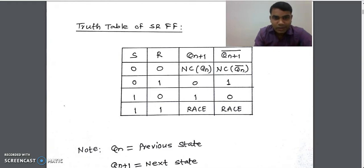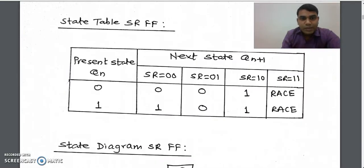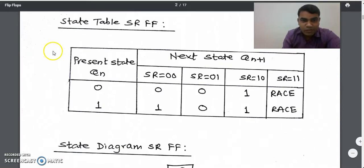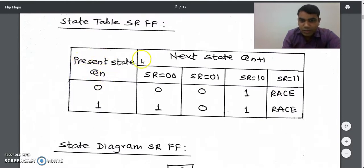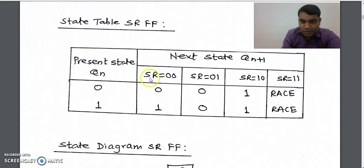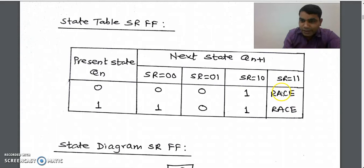All these things are interlinked to each other. To design the state diagram we take the help of the truth table. In the state table there are only two states: present state and next state. It consists of two columns: present state represented by QN, and next state represented by QN+1. In the next state column there are four sub-columns for SR: SR=00, SR=01, SR=10, and SR=11.